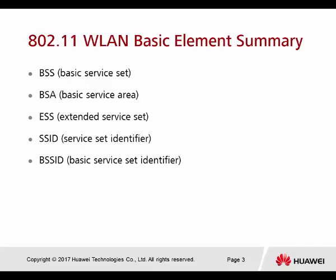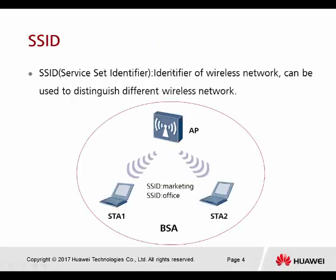Here we have a list of basic element summaries. We have the BSS, which stands for basic service set, then BSA — basic service area — ESS — extended service set — SSID, and the last one is BSSID. The SSID is the identifier of the wireless network and can be used to distinguish different wireless networks.